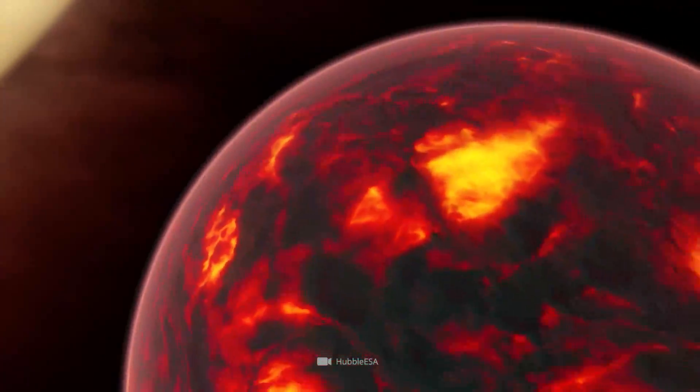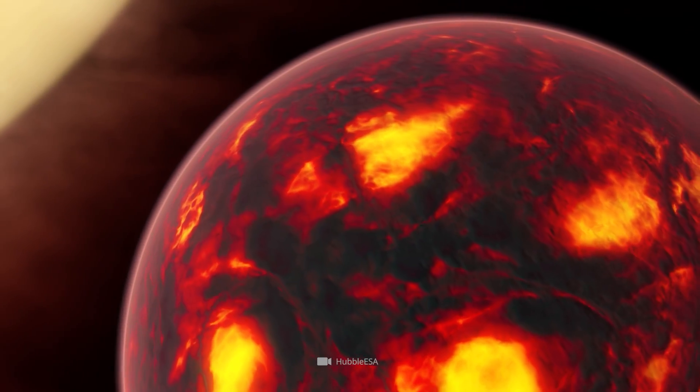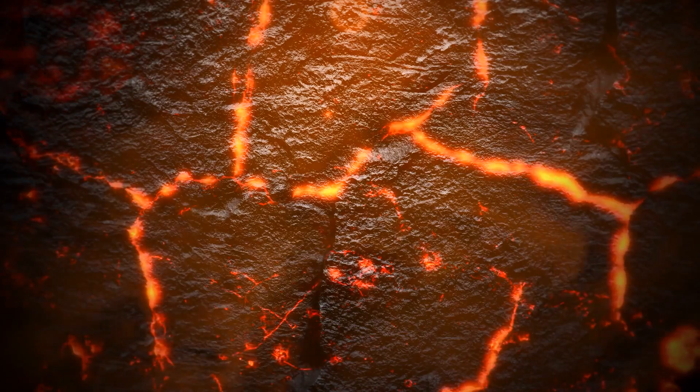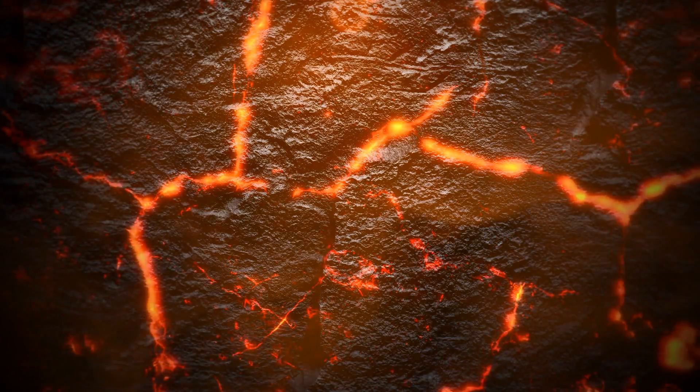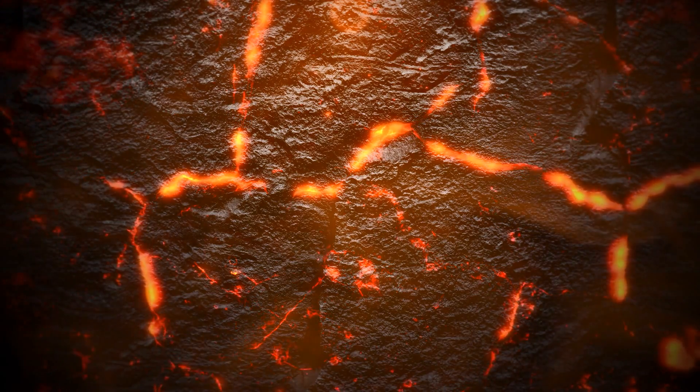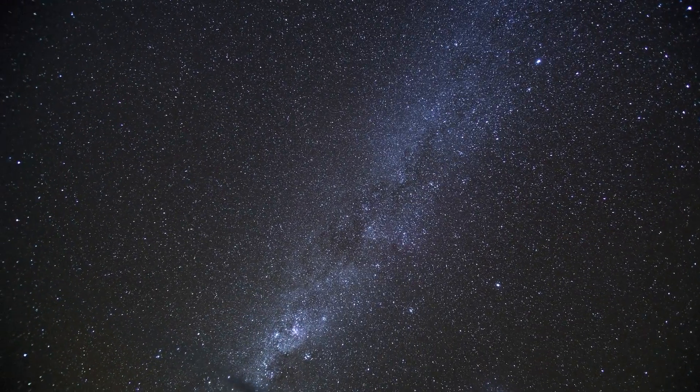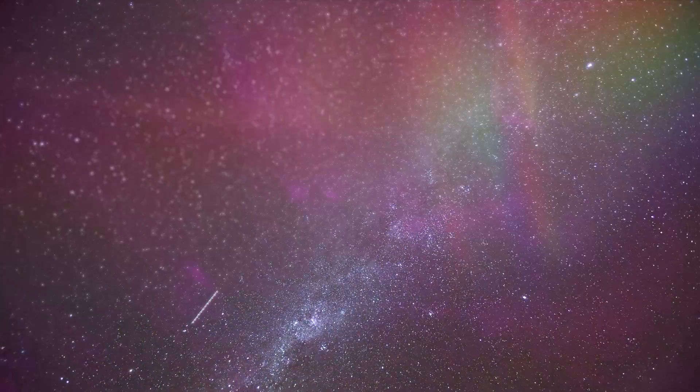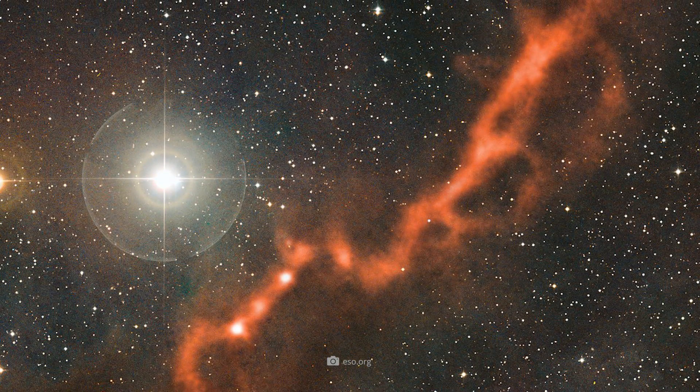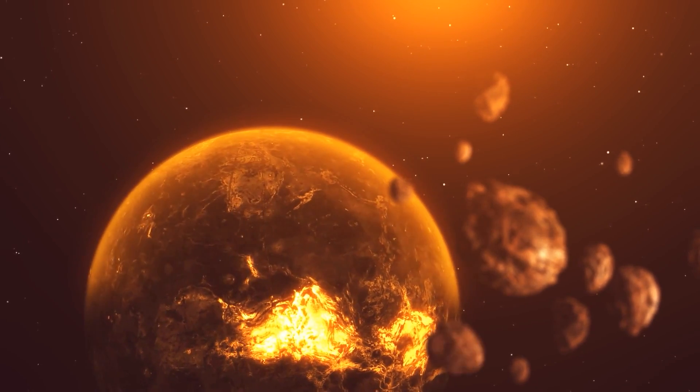The temperature of the exoplanet, which presumably has three to five times the mass of Jupiter, is therefore a red-hot 2000 to 2200 degrees Fahrenheit. In future investigations, experts would like to find out whether this object in the Taurus molecular cloud might have a moon-forming disk.